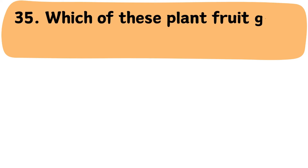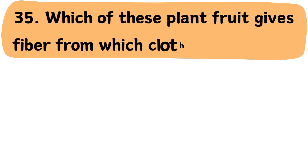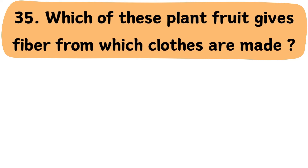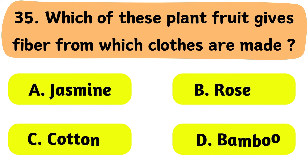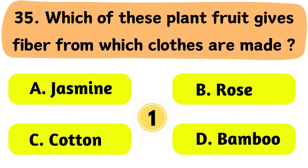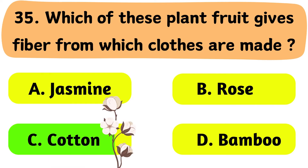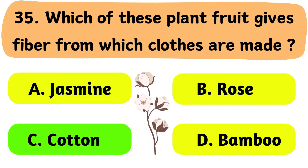Question No. 35: Which plant's fruit gives fibre from which clothes are made? A. Jasmine. B. Rose. C. Cotton. D. Bamboo. The correct answer is Option C: Cotton.